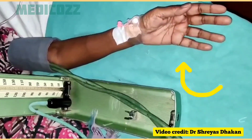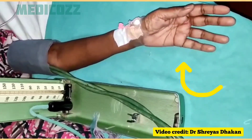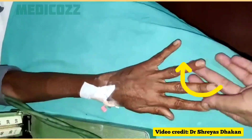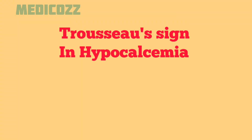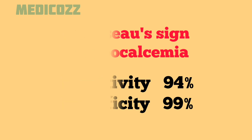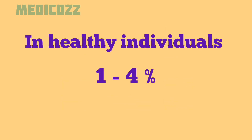How to interpret it: Trousseau's sign has a high sensitivity and specificity for hypocalcemia, with a reported rate of 94% to 99% for both sensitivity and specificity. Though healthy individuals may also exhibit this sign in 1% to 4% of cases.